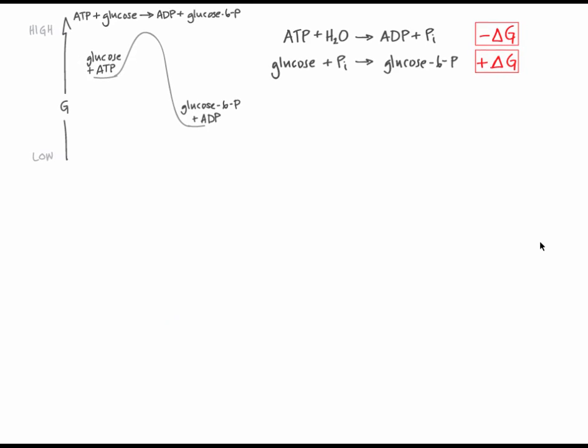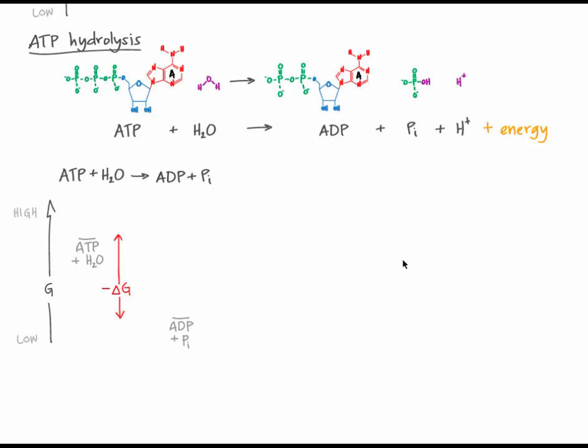ATP is used in a similar way to drive many cell processes. The potential energy stored in the bonds between phosphates is harnessed to do work. But if the hydrolysis of ATP is so favorable, why doesn't ATP break apart on its own in cells? Remember that how easily or quickly a reaction takes place has more to do with its activation energy than with delta G. The activation energy of ATP hydrolysis is high enough that ATP does not hydrolyze without the help of an enzyme. This is what allows us to use ATP as energy storage.